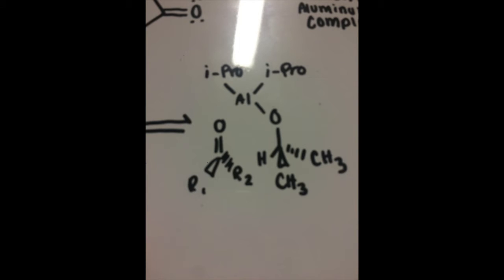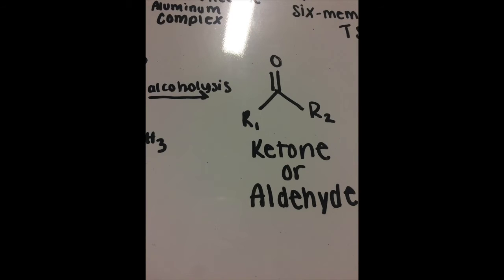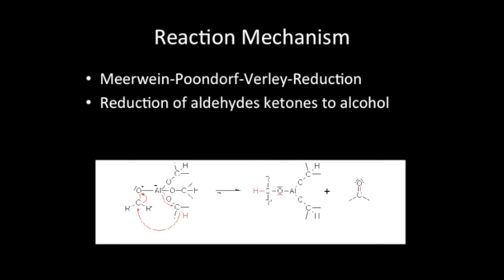This structure undergoes an elimination process of alcoholysis to form a ketone or aldehyde — the final product of the oxidation. The reverse mechanism of this is the Meerwein-Ponndorf-Verley reduction, which involves the reduction of aldehydes and ketones to an alcohol.